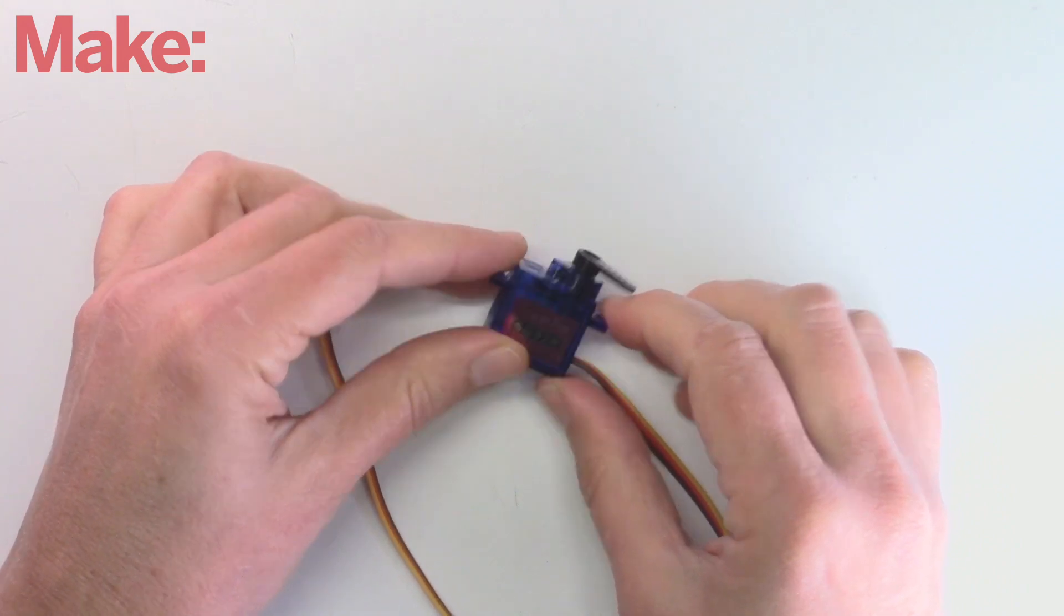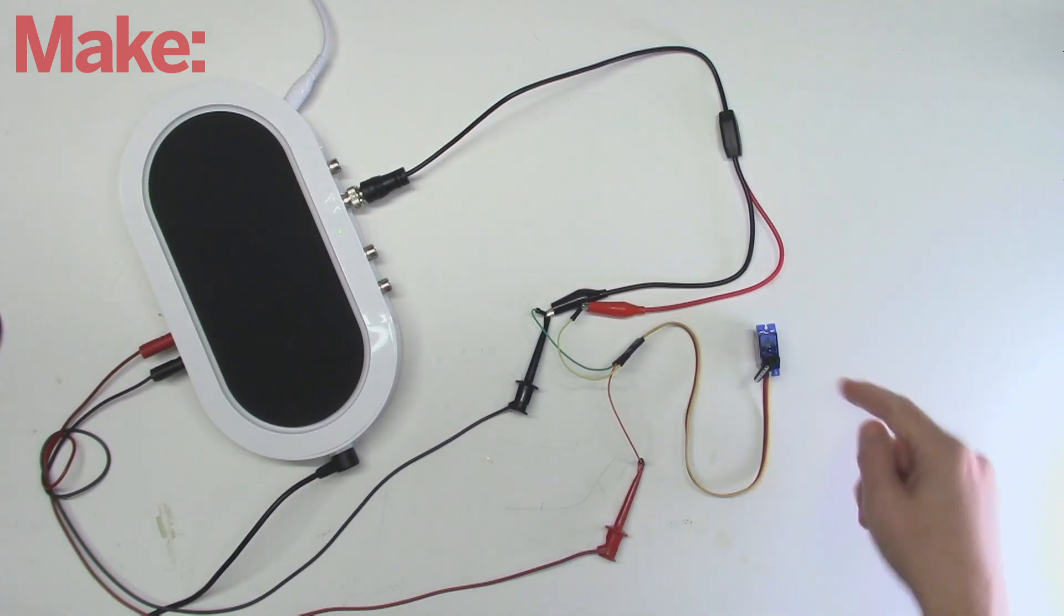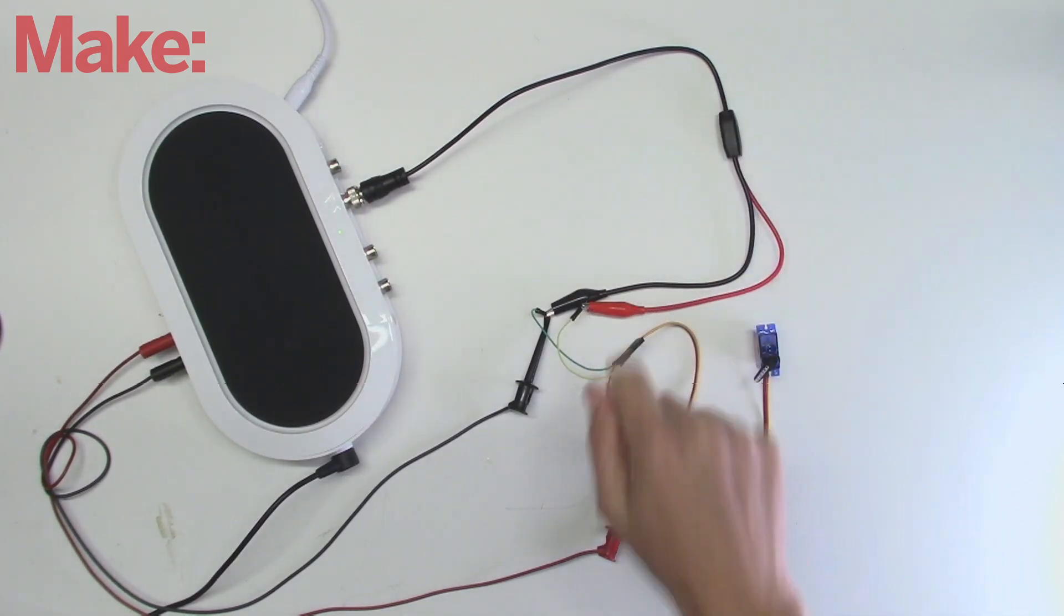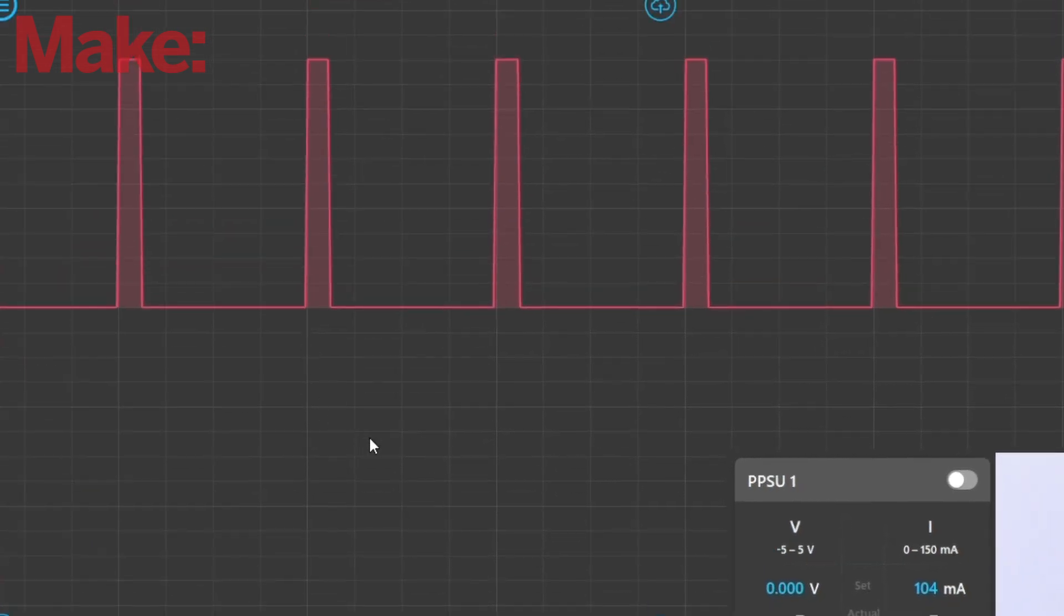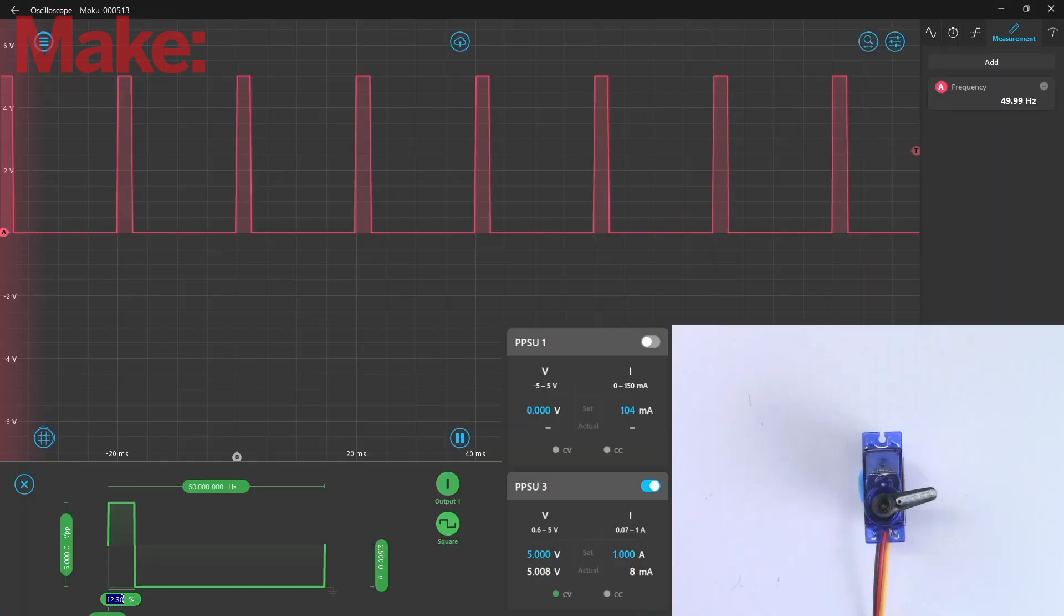This is a TowerPro SG92R servo. We're powering it using 5 volts from the Mokugo power supply and creating a PWM with the waveform generator. The servo expects a PWM with a frequency of 50 hertz, meaning there are 50 pulses per second, or one pulse every 20 milliseconds.